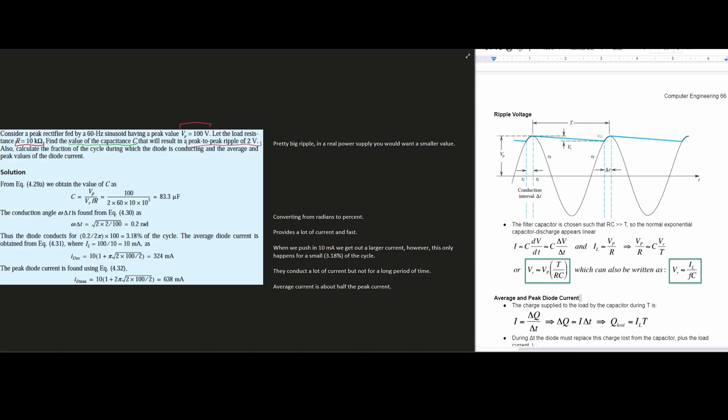We're also going to calculate the fraction of the cycle during which the diode is conducting and the average and peak values of the diode current. We have two things that we need to calculate, and we are given three things. To start this off, we want to find our capacitance, the value of our capacitance C.